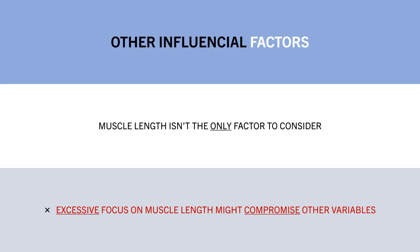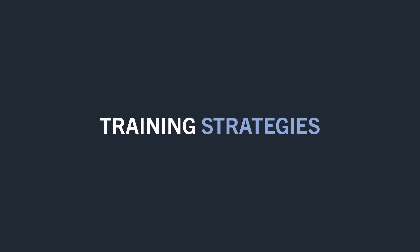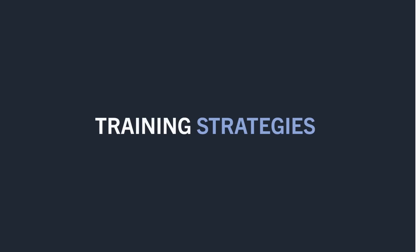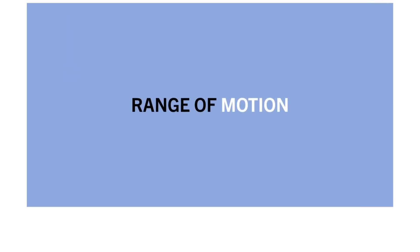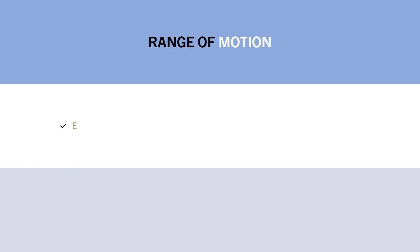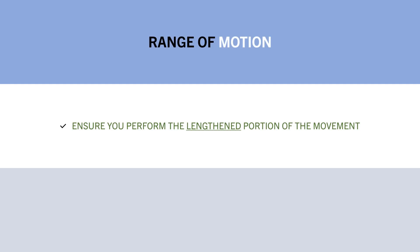So what does all this mean with regards to practical training strategies? There are a few ways that we can incorporate long muscle length training in our routine to assist muscle growth. The first is via range of motion. At the very least, this evidence reinforces the use of full range of motion training. You especially don't want to skip out on the lengthened portion of the movement, as this is likely going to be the most hypertrophic — for example, making sure you squat to full depth and come all the way down for pressing variations.